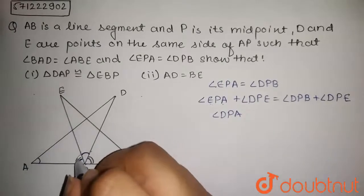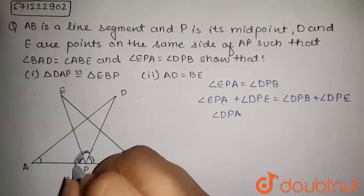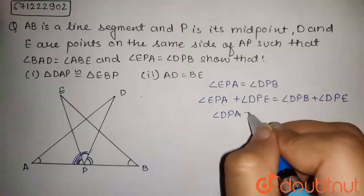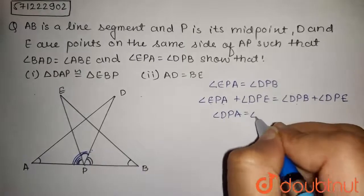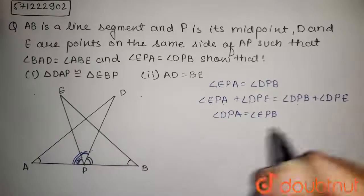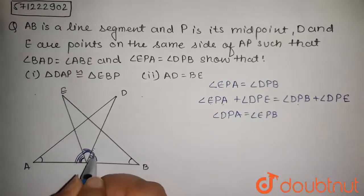That is, this whole angle, and angle DPB plus angle DPE will be angle EPB. That is, this whole angle.